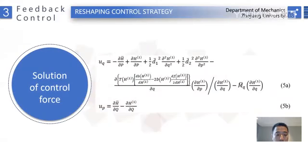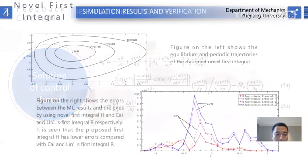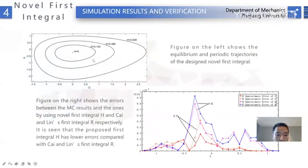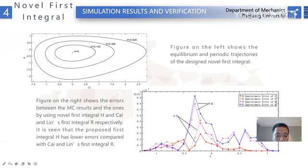Next, we will give the simulation results and verification. This graph shows the equilibrium point and orbit of the new force integrator. It can be seen that the orbit is closed, indicating that the new force integrator is correct. The second figure shows the errors between the Monte Carlo result and the stochastic averaging method results using the new force integrator H and Tsai and Lin's force integrator R, respectively. It is seen that the proposed force integrator H has lower errors compared with Tsai and Lin's force integrator R.